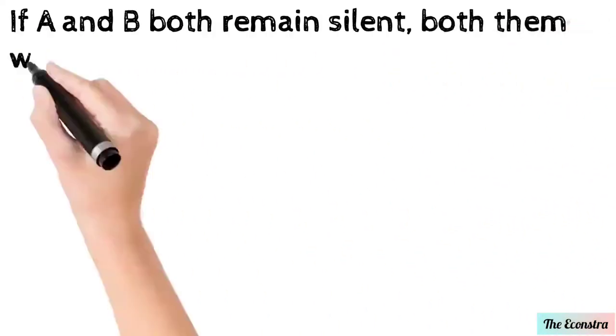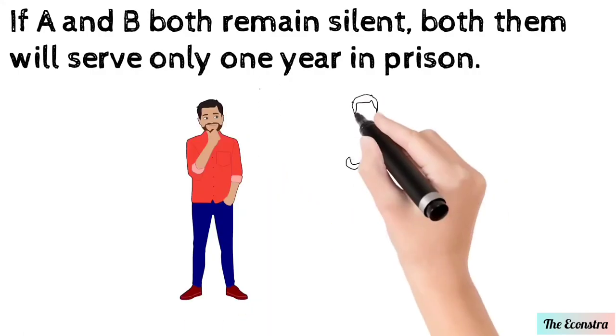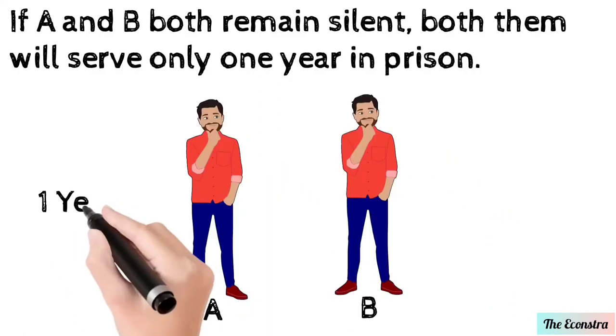If A and B both remain silent, both of them will serve one year in prison.